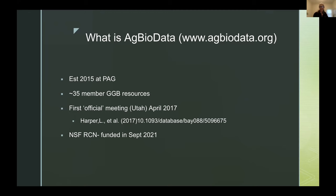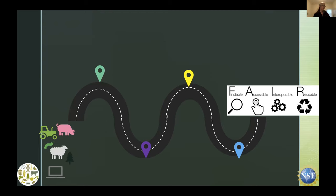Although unfunded initially, we scraped together money for a first official meeting in Utah in 2017, where we formed initial working groups and made recommendations for how genomic databases can be more accessible and fair. This led to grant writing that resulted in an NSF-funded Research Coordination Network grant started in September 2021. Our overarching goal is making agricultural genomic data more findable, accessible, interoperable, and reusable — a FAIR data ecosystem. Our aims include recommendations for implementing standards for fair data, expanding the network for inclusivity, diversity, and equity, and creating fair data management training materials.